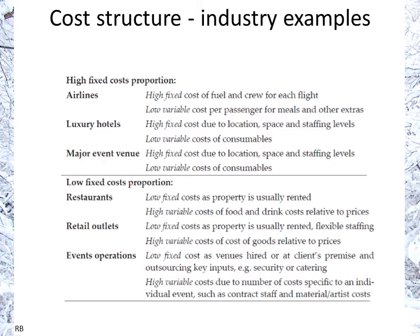Low fixed cost proportion industries include restaurants, retail outlets, and event operations. There, the large proportion of the cost to get a sale is the cost of sales — in other words, the variable cost involved in making the sale: food and drink, cost of goods for retail outlets, and cost of renting or using an event venue, as well as contract staff and all that.